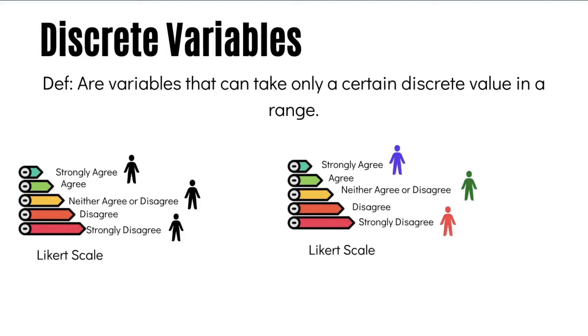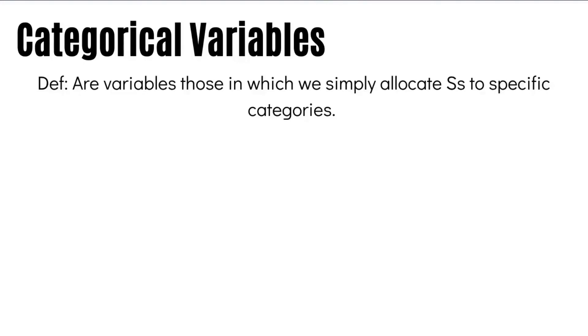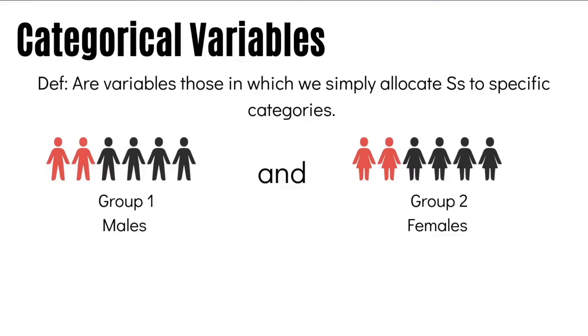Categorical variables are those in which we simply allocate participants to specific categories — hence the name. When dealing with categorical data, we have a finite number of groups to investigate. A good example is gender, where participants are placed into categories such as males versus females. Another example is two groups where one receives an intervention while the other does not — that is also a categorical variable.